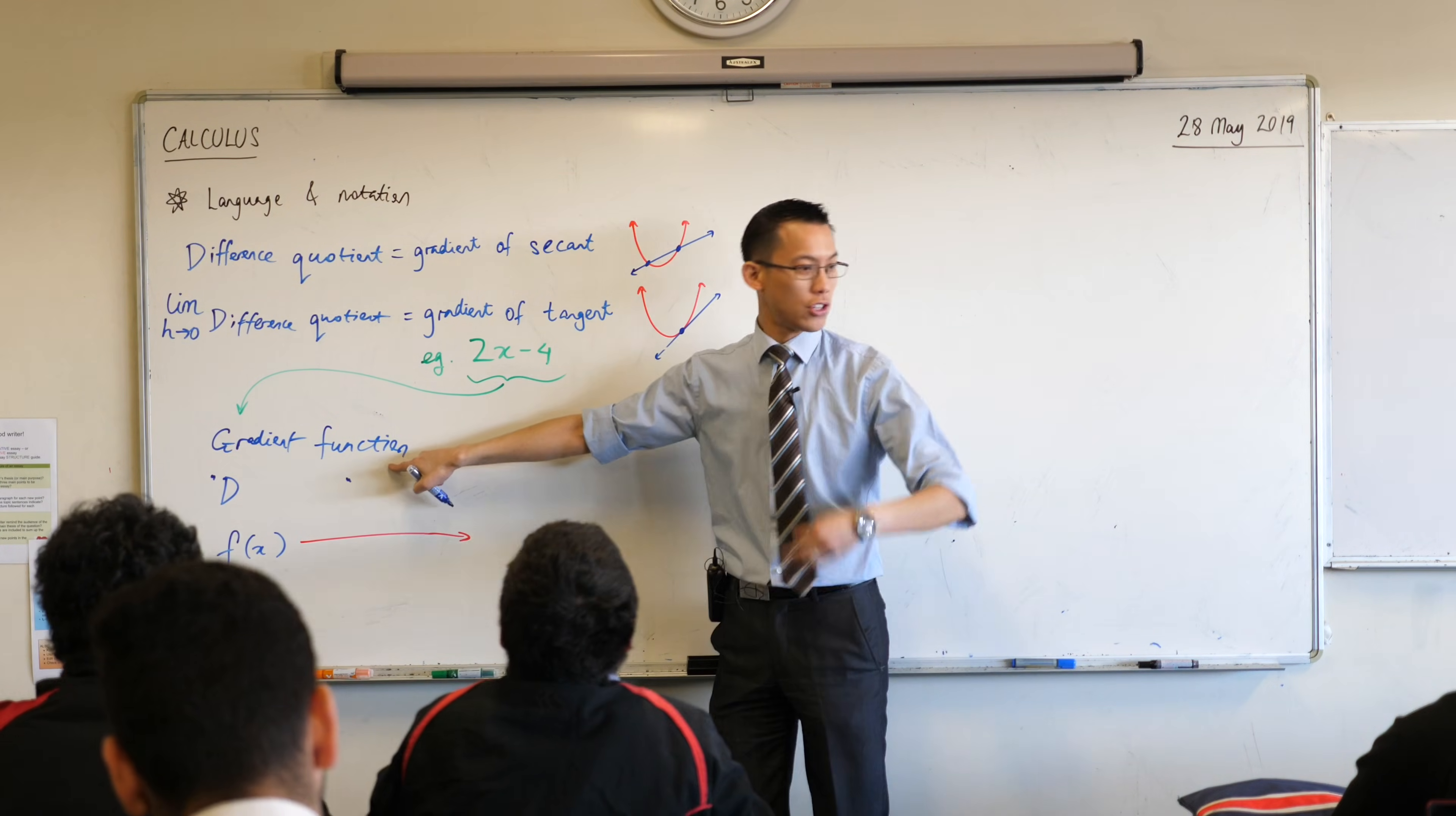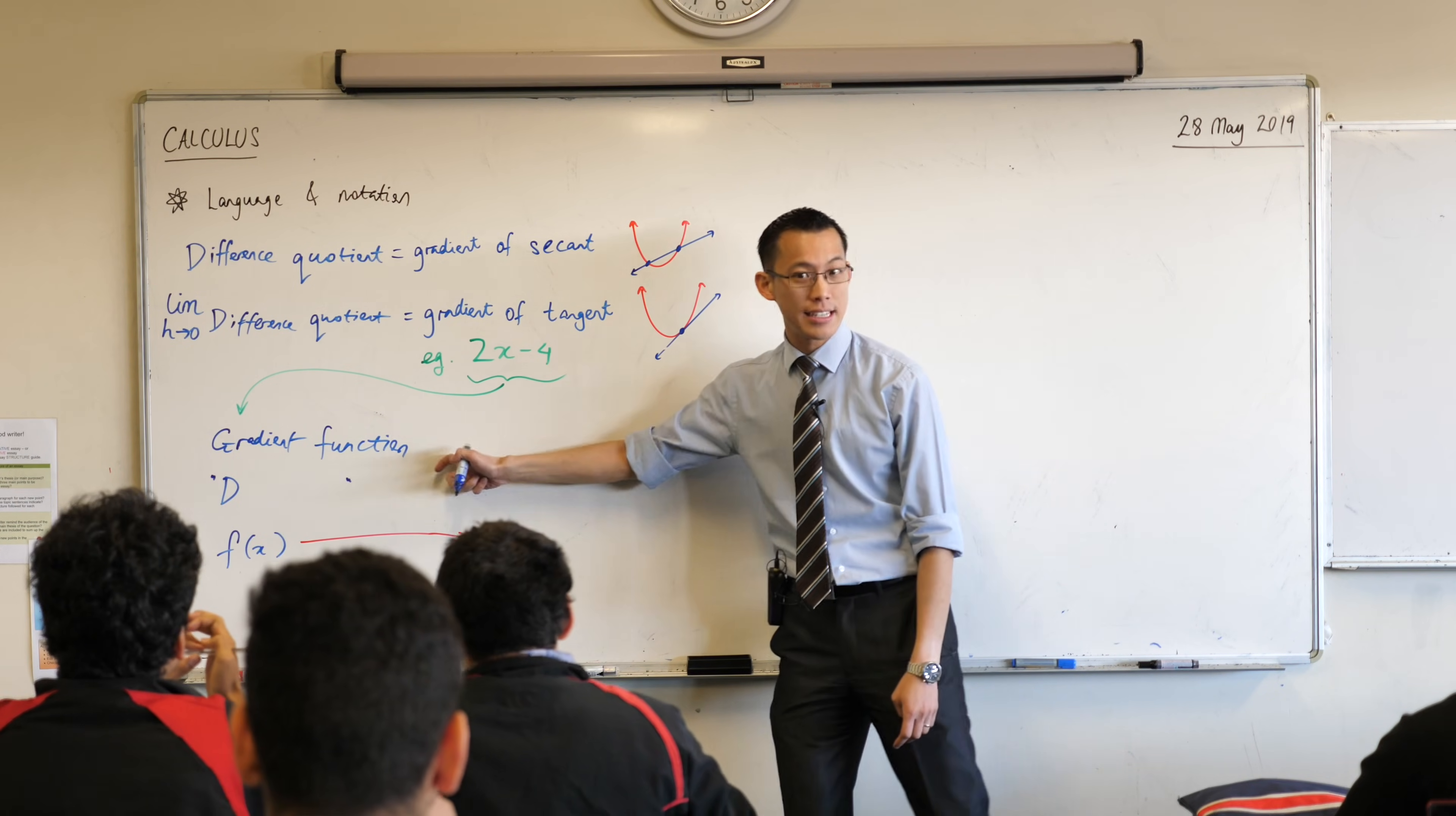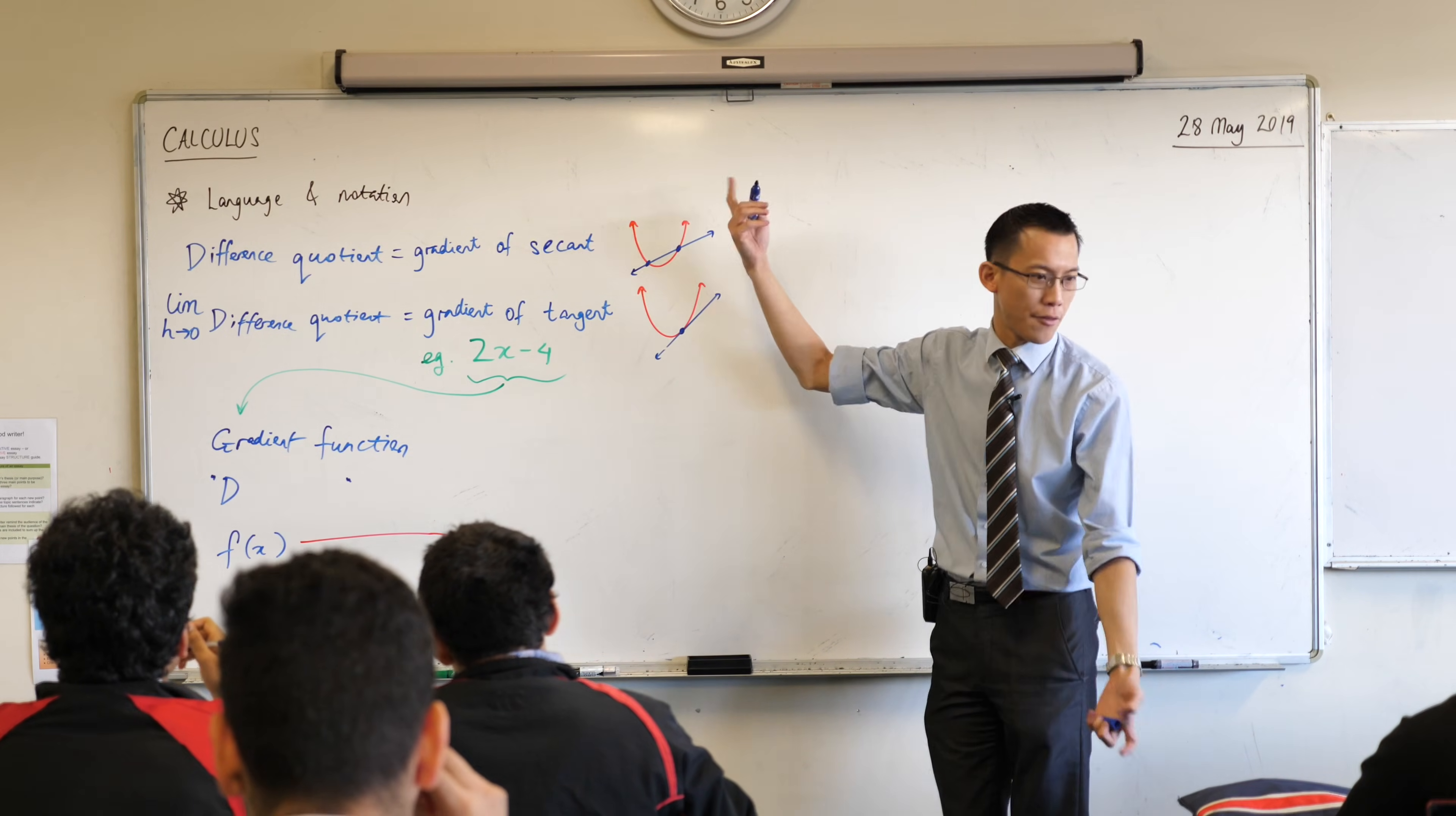The gradient's a function that changes in response to what value of x you put in there. Now, being that it is itself a function, I'm going to use function notation to describe it. Now, I could just call it, like, if this red thing was f of x.